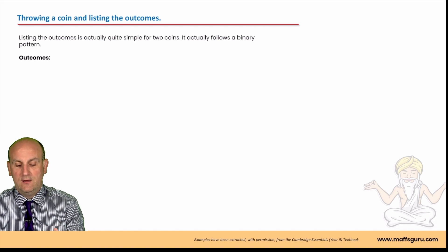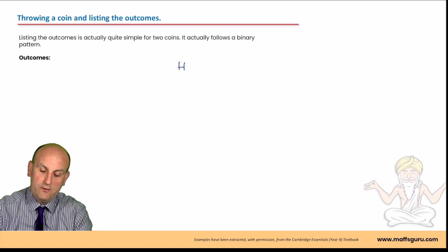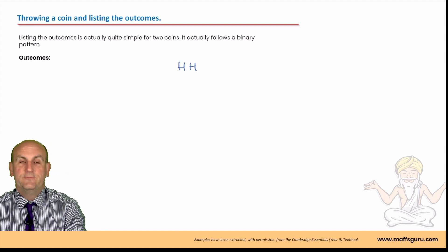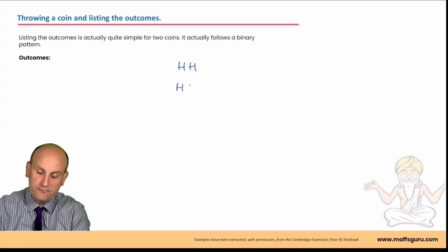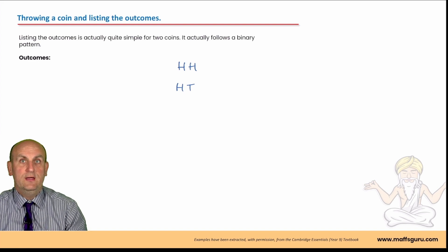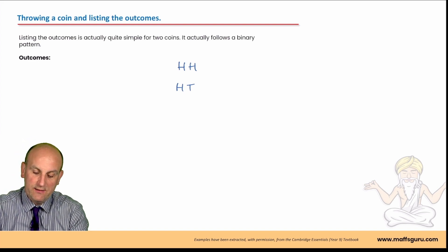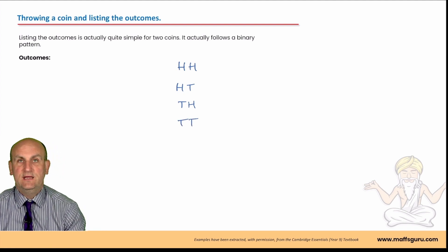If you've got a coin, what I want you to do is pause the video and toss it twice and see what happens. So, having tossed the coin, you write down the information and hopefully some of you will have got a head followed by a head. You've got two heads. Others would have got a head first followed by a tail.